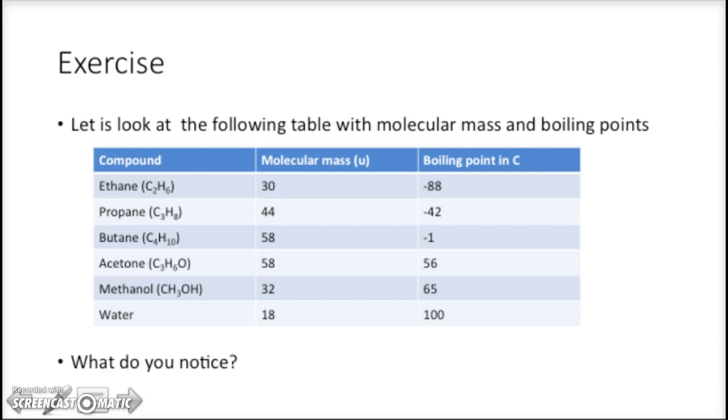But what about butane and acetone? Well, 58 is the molar mass, but acetone has much higher boiling point. Let's talk about methanol and water. 32, 65 is the boiling point of methanol. The molar mass is 18, and the boiling temperature is 100. So something's going on over there. And that brings us to the two other intermolecular forces.